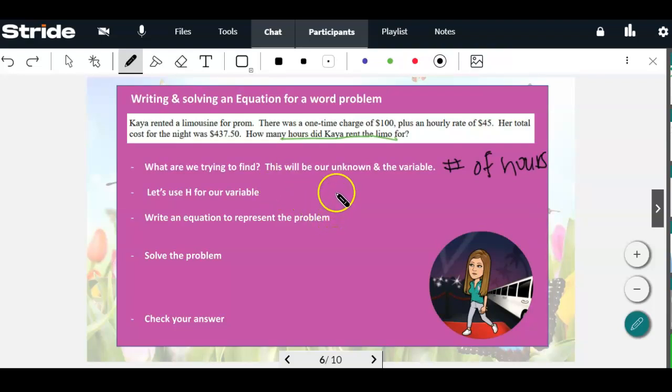Write an equation to represent the problem. So let's carefully go through this. There was a one-time charge of $100 plus an hourly rate of $45 an hour. That would be the 45 times each hour. So what that looks like is you have $45 per each hour plus the one-time charge. Her total cost for the night was $437.50. So you can pause this video and solve that equation. For this recording, we're not going to do that. Just know you should know how to solve for H.